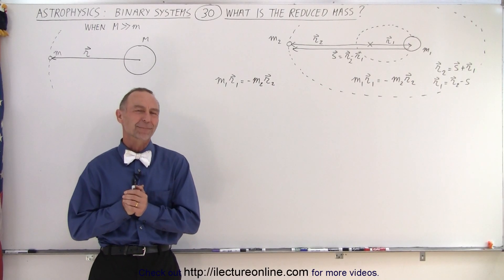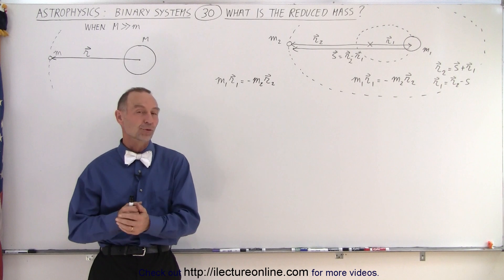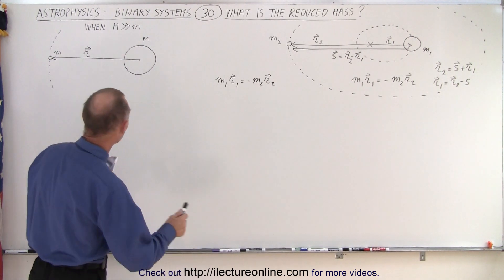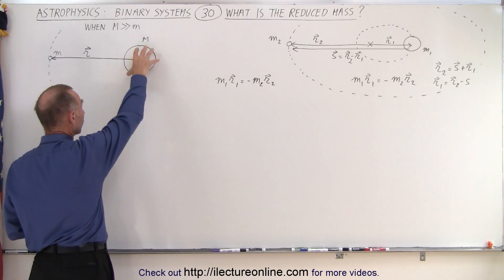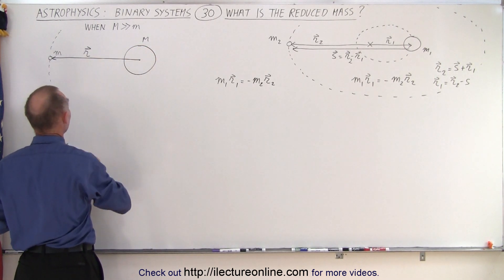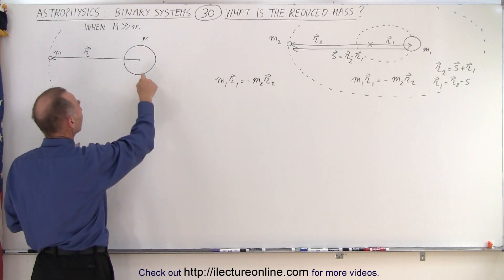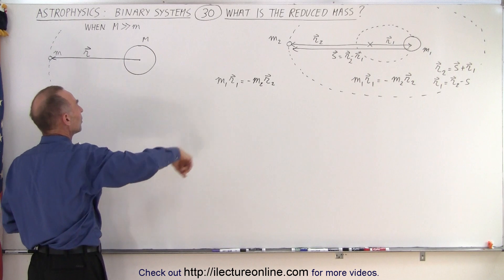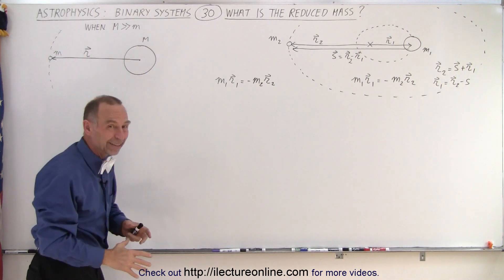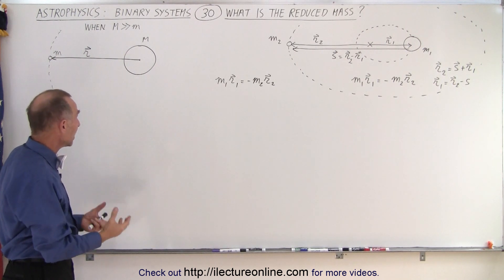Welcome to our lecture online. Now let's take a look at what is the reduced mass. It turns out that if we keep things simple and we assume that the large mass of the star or the sun is much, much greater than the small mass of the planet, we really don't care about the barycenter. We just assume that the small object simply revolves around the large object and around the center of mass of the large object, and that is a pretty good approximation in many cases.